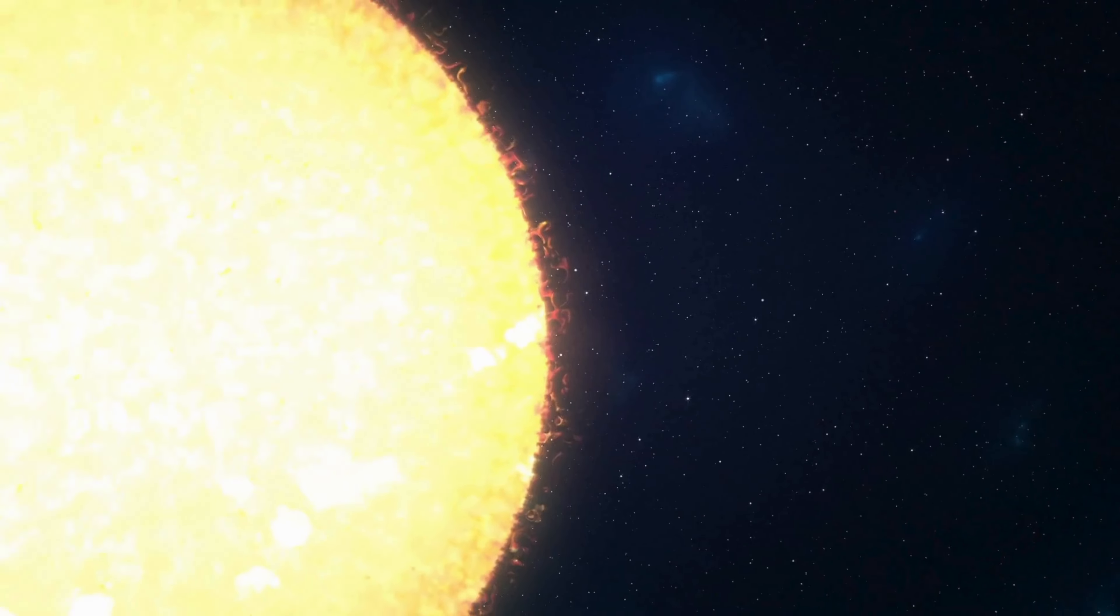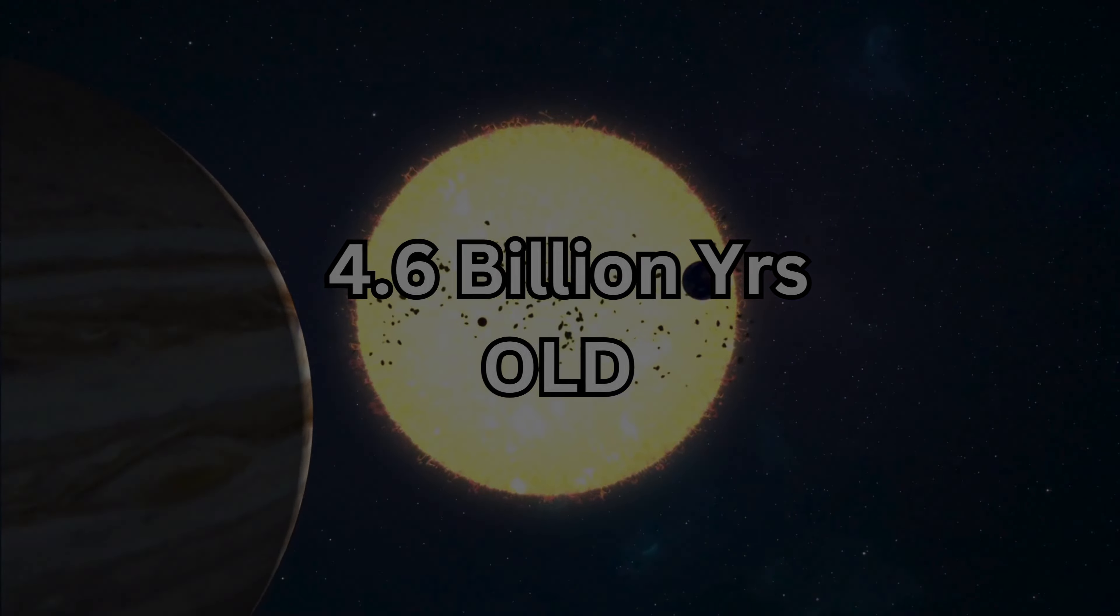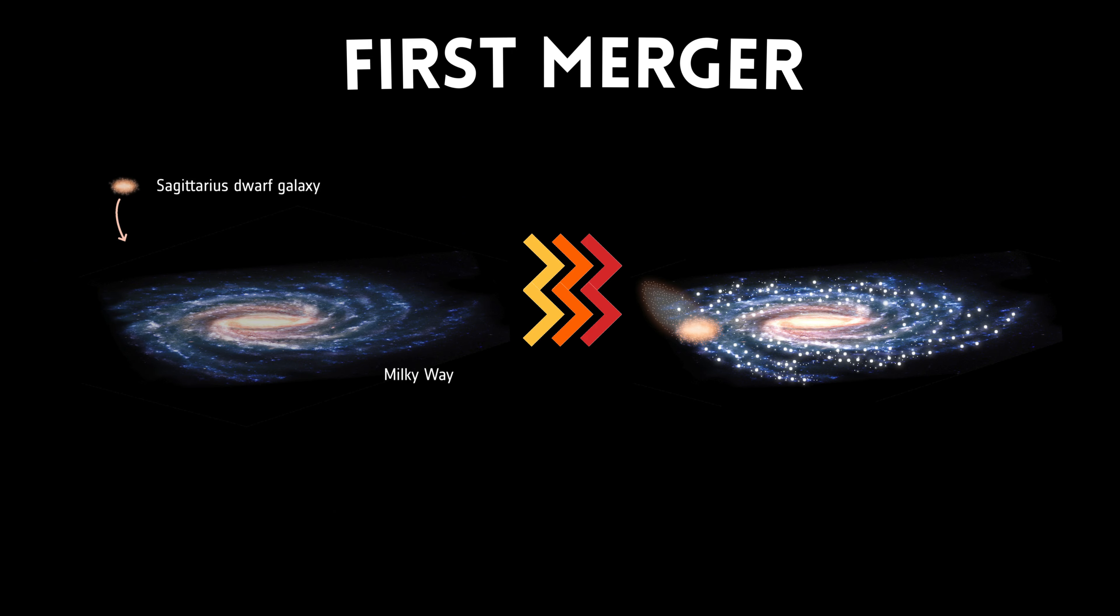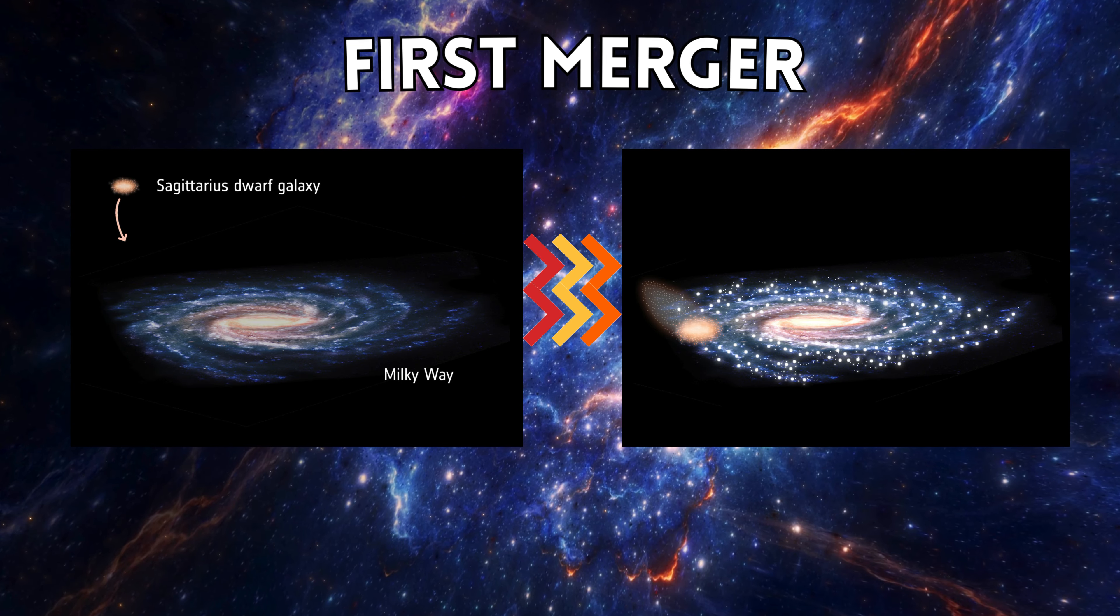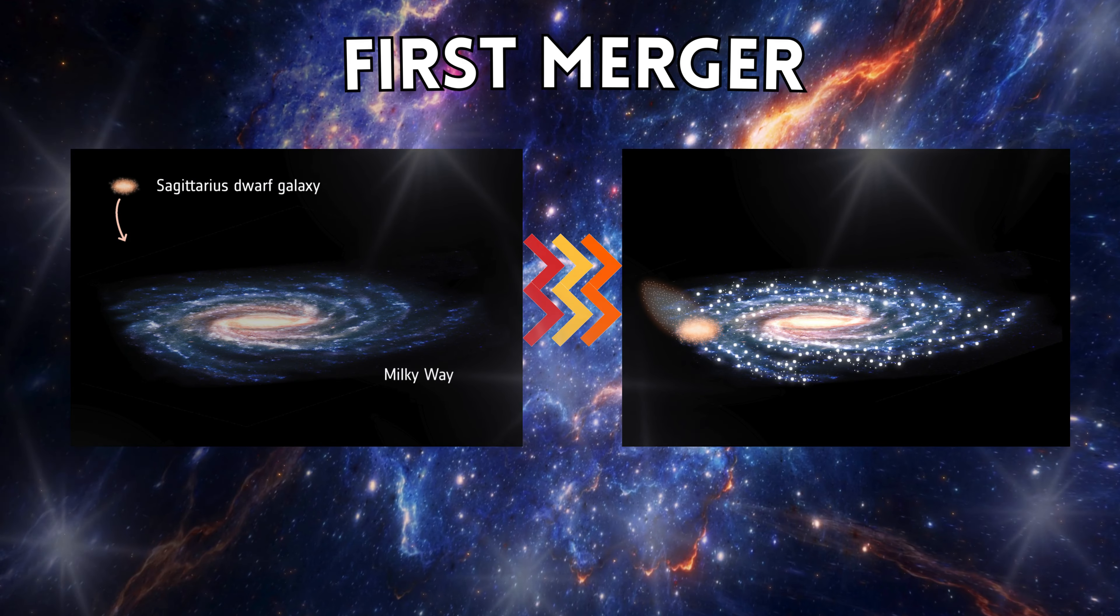We know that our solar system is 4.6 billion years old. This means that the first wave of this merger caused a sudden densification of the gas clouds across the Milky Way galaxy, resulting in a huge number of stars being born.